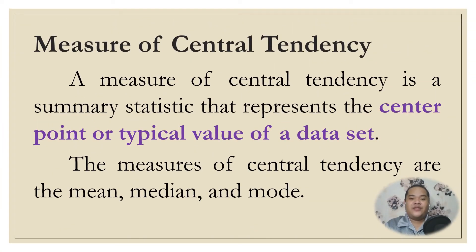A measure of central tendency is a summary statistic that represents the center point or typical value of a data set. These measures indicate where most values in a distribution fall and are also referred to as the central location of a distribution. You can think of it as a tendency of the data to cluster around the middle value. There are three measures of central tendency: the mean, the median, and the mode.